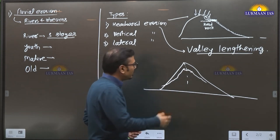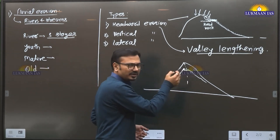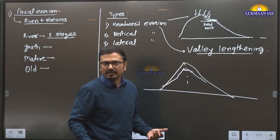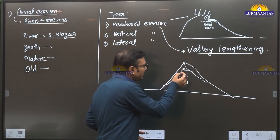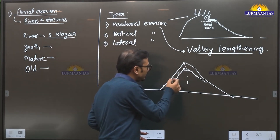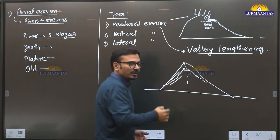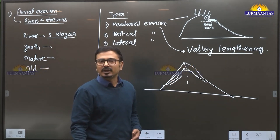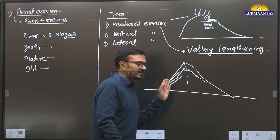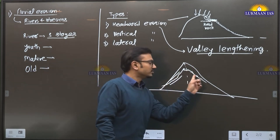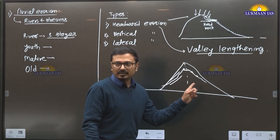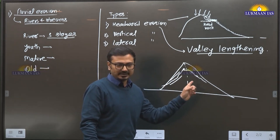Now, this river will try to flow. The waters of these rivers will now flow in this direction, and this will now be a dry bed. Earlier there was a river flowing in that channel — now it is dry. Because this has been captured. This is also called river piracy, or river capture.